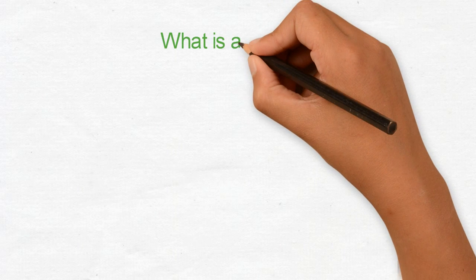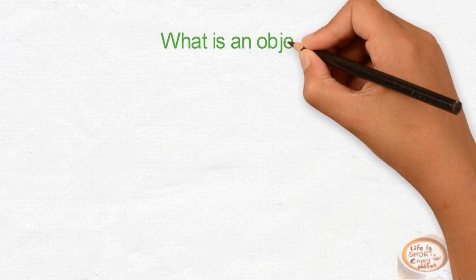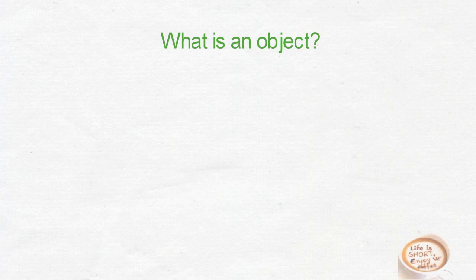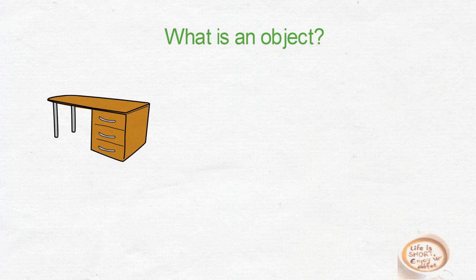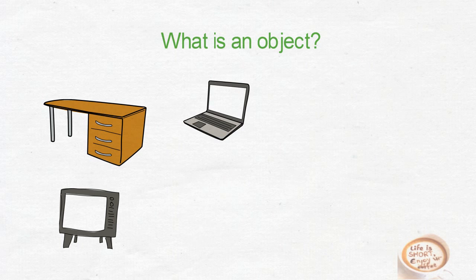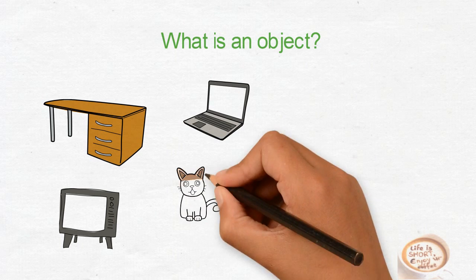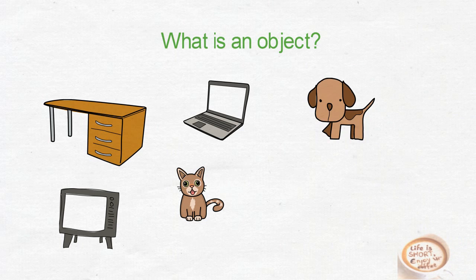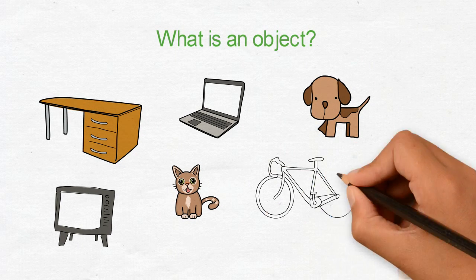Let's first understand what is object. Look around you and you will find many real objects like your table or desk, your television or laptop, your cat, dog, your bicycle, and even your car.